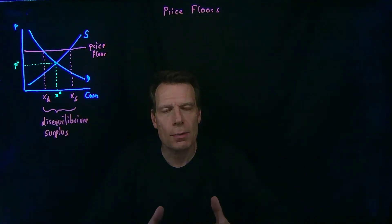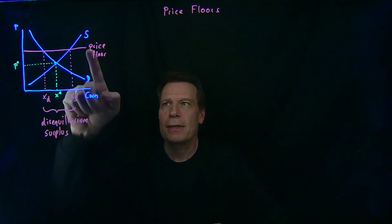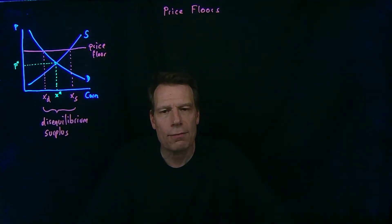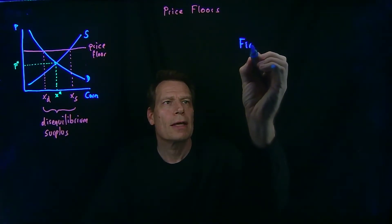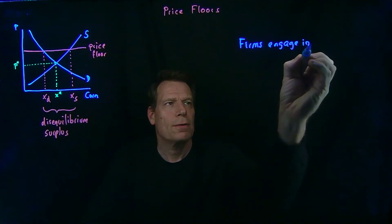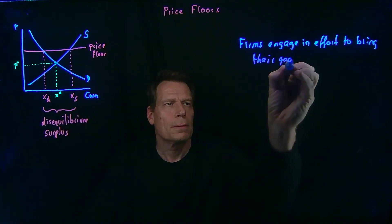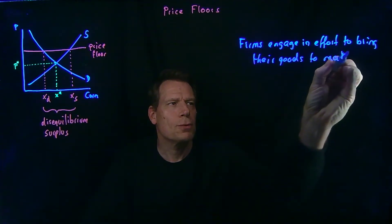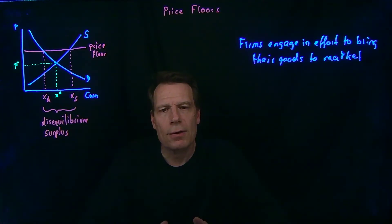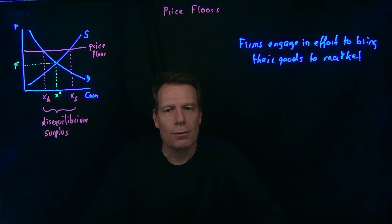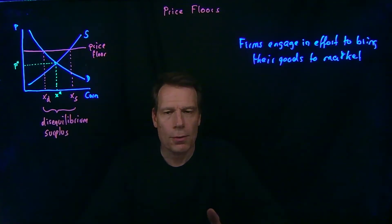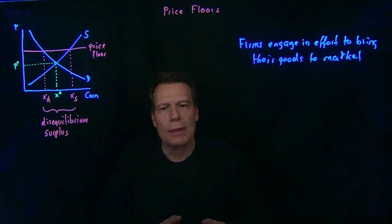What's likely to happen to resolve this disequilibrium? Now it's the farmers — the suppliers — who have an incentive to engage in effort. They are getting stuck with corn that nobody is buying, so they're going to engage in effort. Firms, or in our case farmers, engage in effort to bring their goods to market to reach those limited numbers of consumers willing to buy at the price floor. That effort is costly — it imposes additional costs on farmers beyond just producing the corn. They might drive faster to market, get up earlier, or spend more on advertising.